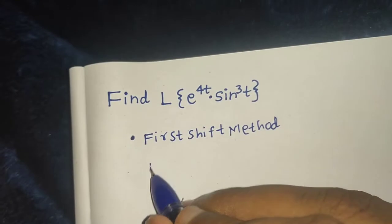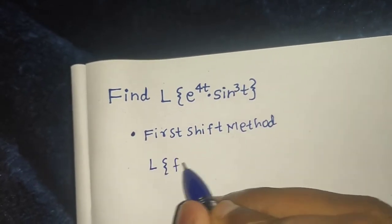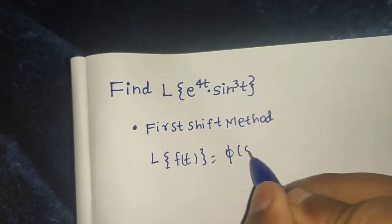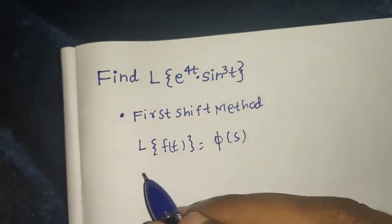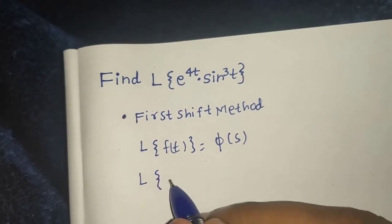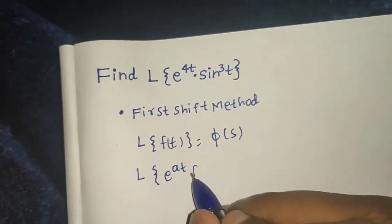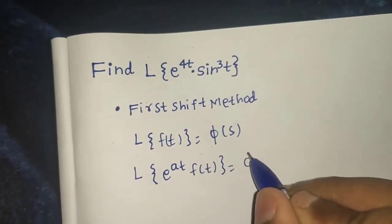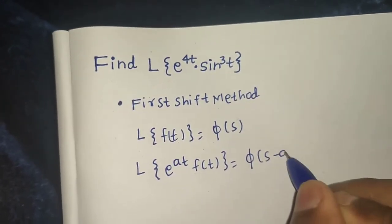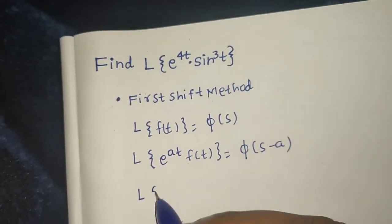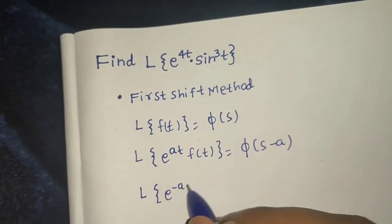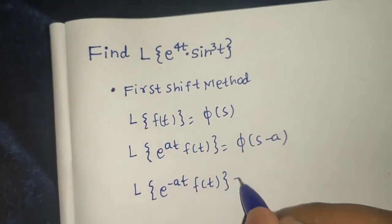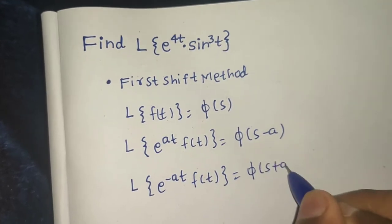According to the First Shift Method, if Laplace of f(t) is φ(s), then Laplace of e^(at) · f(t) will be equal to φ(s − a), and Laplace of e^(−at) · f(t) will be equal to φ(s + a).